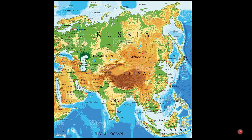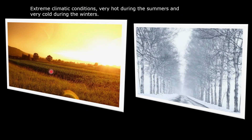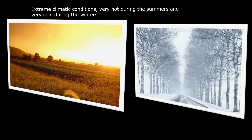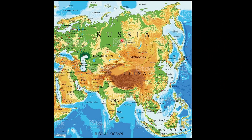In a continental type of climate, the summers are very hot and the winters are intensely cold. Temperatures during the summers can soar very high and temperatures during the winters can be very low — freezing cold. This happens mainly because of these areas being very far away from the moderating influence of the seas.